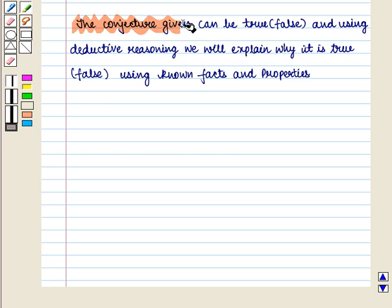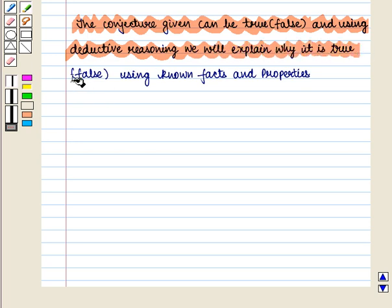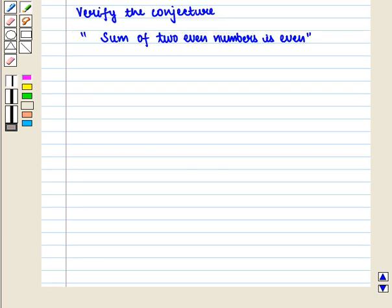In simple words, the conjecture given can be true or false. And using deductive reasoning, we will explain why it is true or false using known facts and properties. Let us consider the previous example.